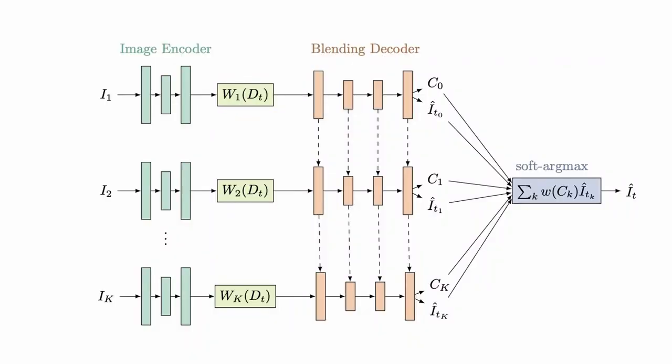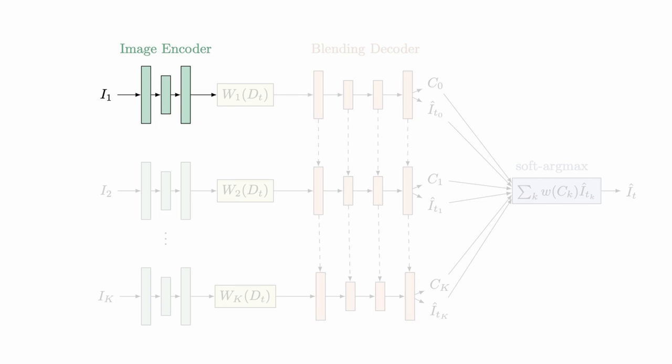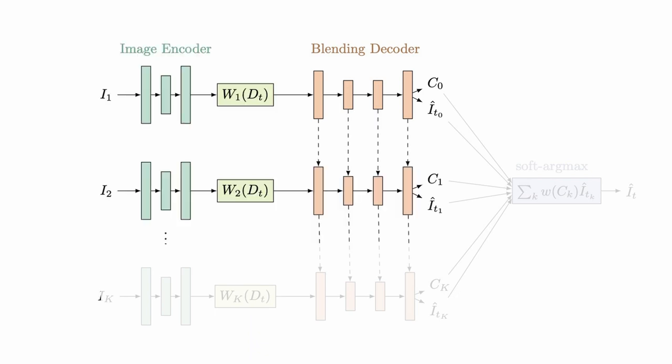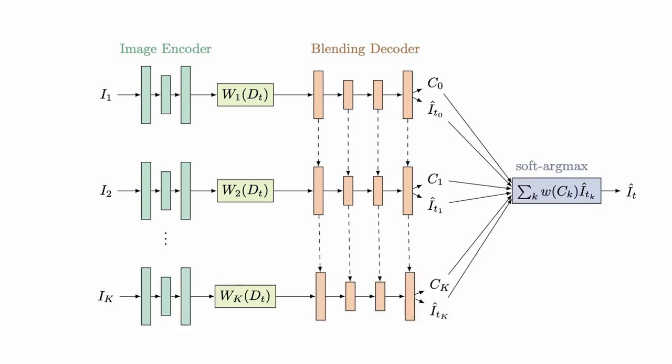The processing of image features in the target view is performed by a recurrent network that integrates information from multiple source images. Each source image is first encoded using a convolutional network. The encoded features are then mapped to the target view using the proxy geometry. The mapped features are decoded by another convolutional network that produces estimated colors and confidence values in the target view.